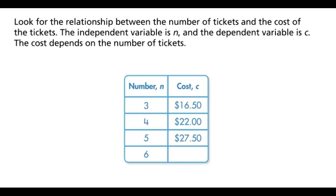The independent variable is n and the dependent variable is c. The cost depends on the number of tickets. To make sense of the problem, find the price of one ticket.